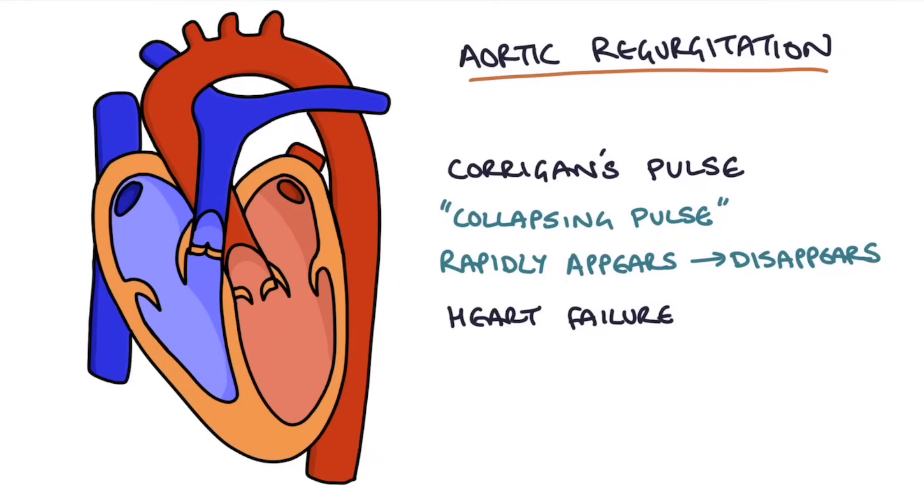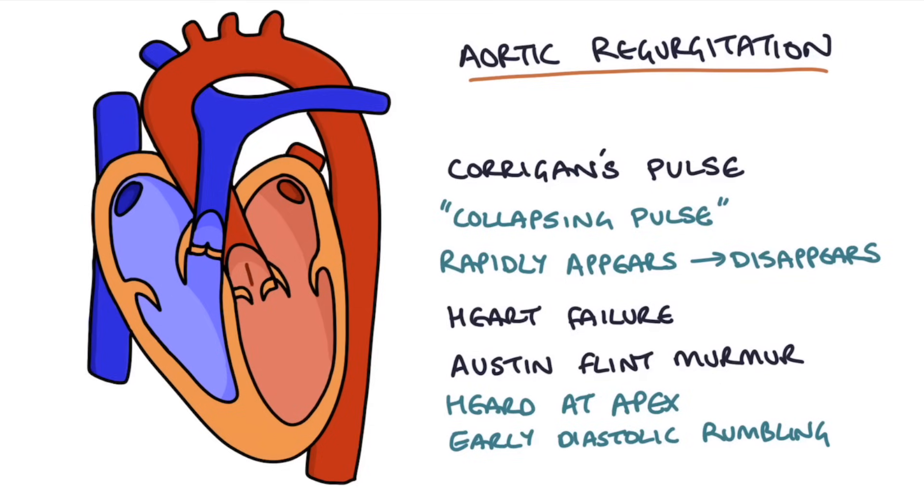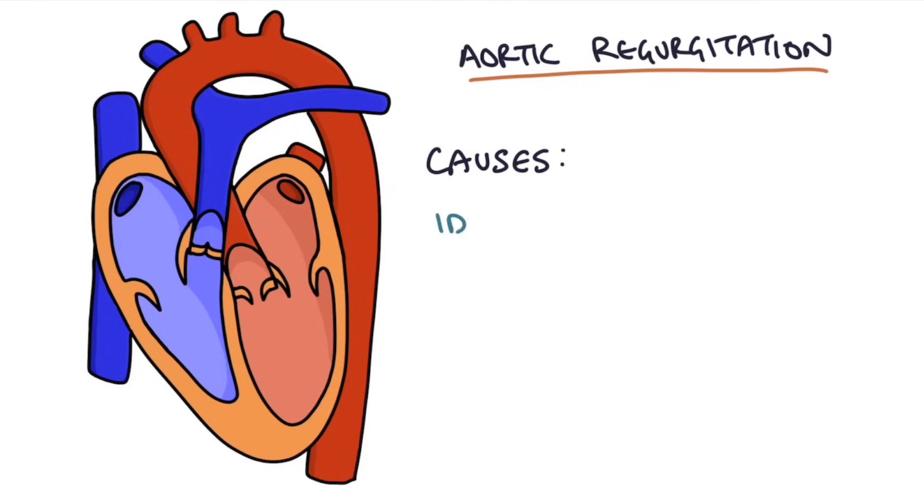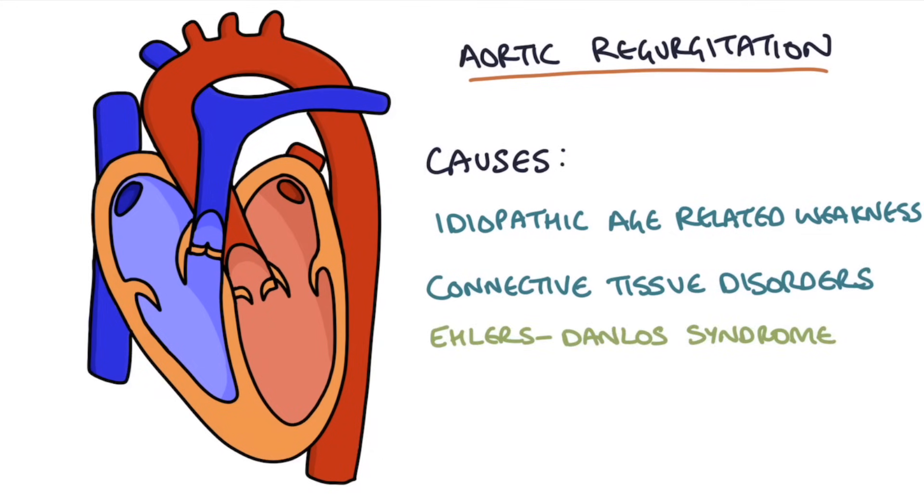It can also cause something called an Austin Flint murmur, and this is worth knowing about just for your exams. It's heard at the apex and is an early diastolic rumbling murmur, and this is caused by blood flowing back through the aortic valve and over the mitral valve causing the mitral valve leaflets to vibrate. This is very difficult to hear in real life. Aortic regurgitation is caused again by idiopathic age-related weakness, but it's also worth remembering that it can be caused by connective tissue disorders such as Ehlers-Danlos syndrome or Marfan syndrome, where patients with these conditions have difficulty in creating strong connective tissues leading to weakness of the valve leaflets.